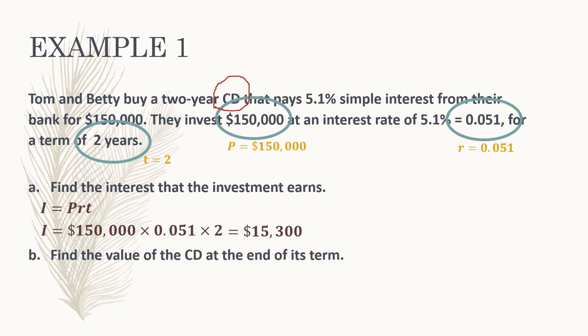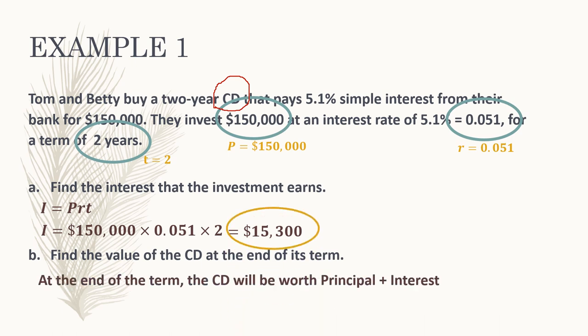What that means is that at the end of the two years, whenever Tom and Betty come back to collect their money, they will have earned $15,300 in interest. The next part asks us to find the value of the CD at the end of its term. The CD will be worth the principal plus the interest gained: $150,000 plus $15,300 equals $165,300. That's how much Tom and Betty will be able to withdraw at the end of the two-year term.